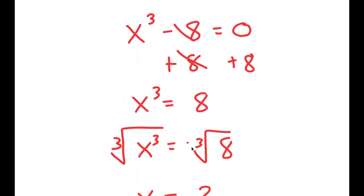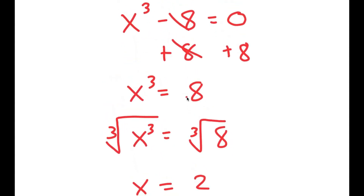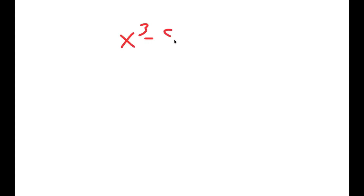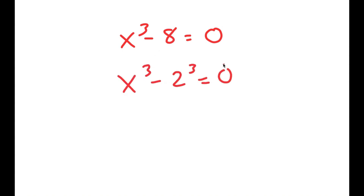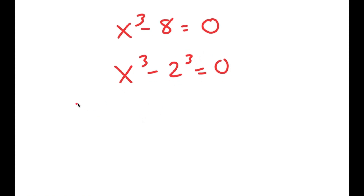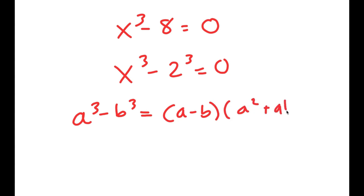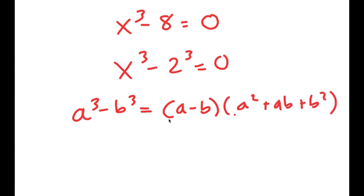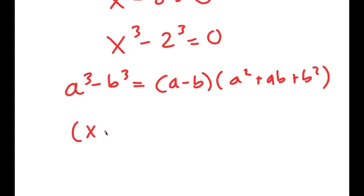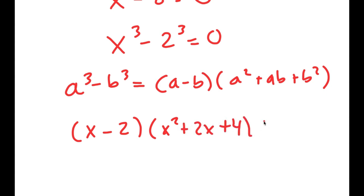But actually, there are more than one solution to this equation. So I'm going to rewrite my equation: x to the power of 3 minus 8 equals 0. And now I'm going to rewrite 8 as 2 to the power of 3, so I get x to the power of 3 minus 2 to the power of 3 is equal to 0. Then I'm going to use the formula a³ minus b³ equals a minus b times a squared plus ab plus b squared. So this turns into x minus 2 times x squared plus 2x plus 4 is equal to 0.